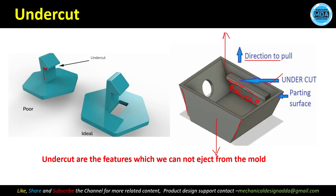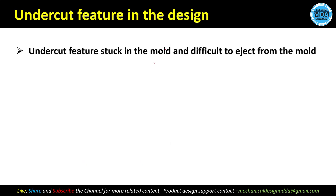This undercut design is a poor design. But if you make small changes — like adding a small cutout — we don't need any additional mechanism to remove the undercut. With just the two-part mold we can remove this feature and eject the part. Always try to design the part free from undercut features, as they generally get stuck in the mold and are difficult to eject.